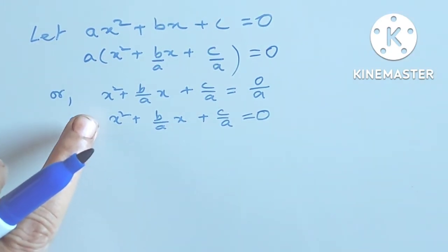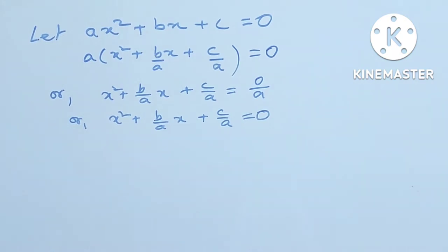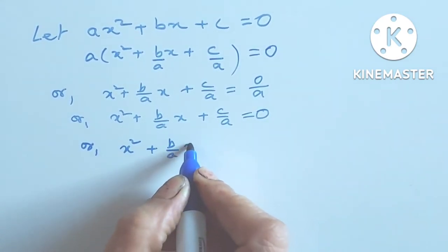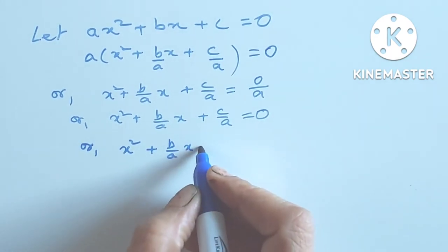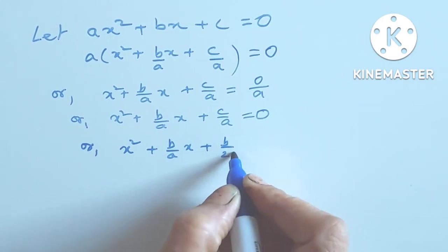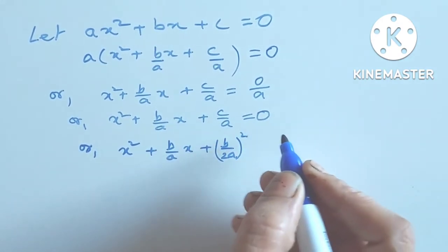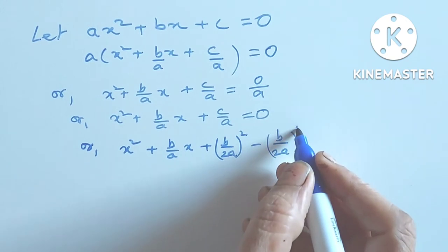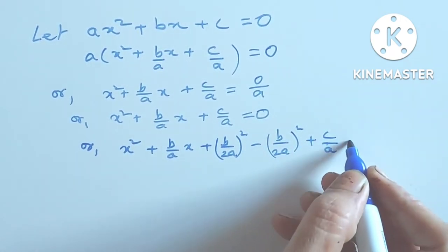Now the coefficient of x squared is 1. For the completing the square method, we have to eliminate the coefficient of x squared other than 1, so we work with x squared plus (B/a)x plus C/a is equal to 0.